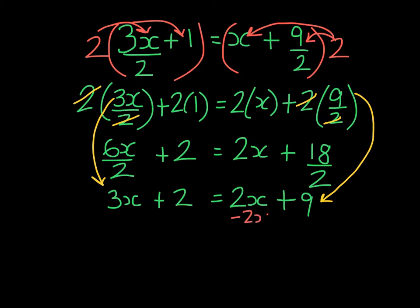We proceed to solve. We subtract 2x from both sides. We're left with 1x on the left-hand side, plus 2, equaling 9. We do our inverse operation, which is to subtract 2.